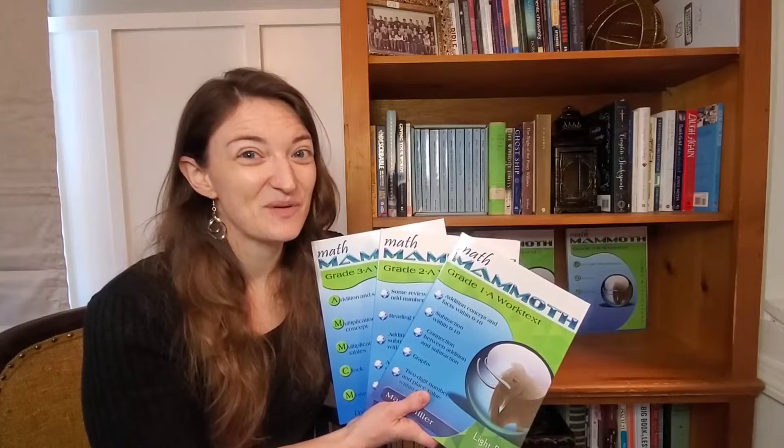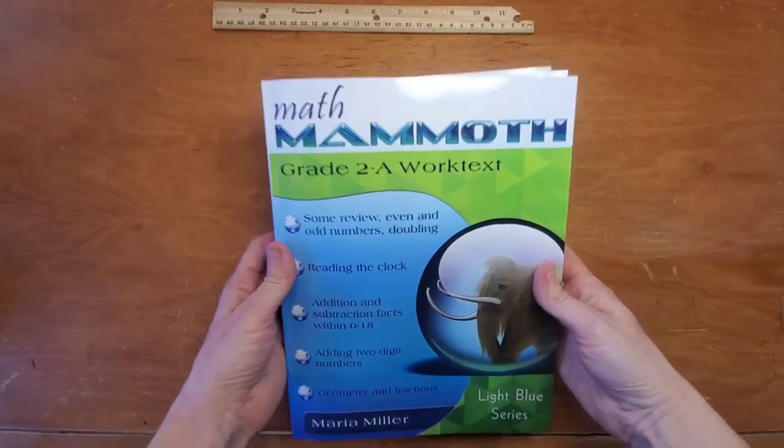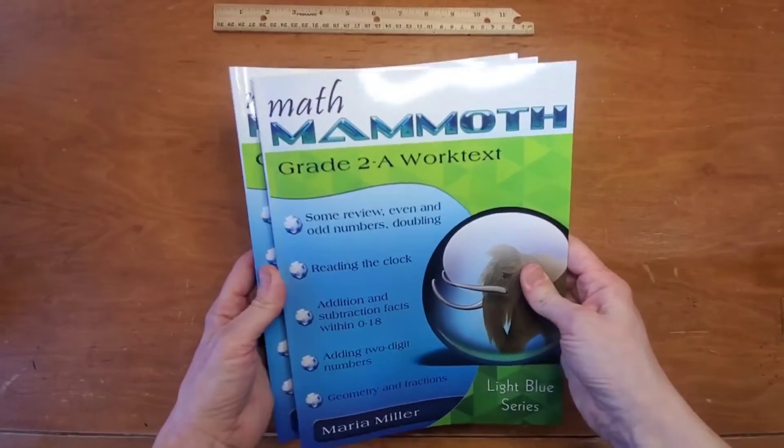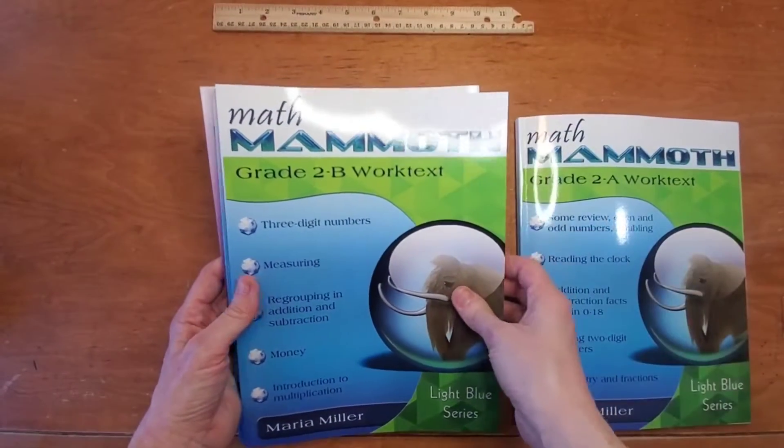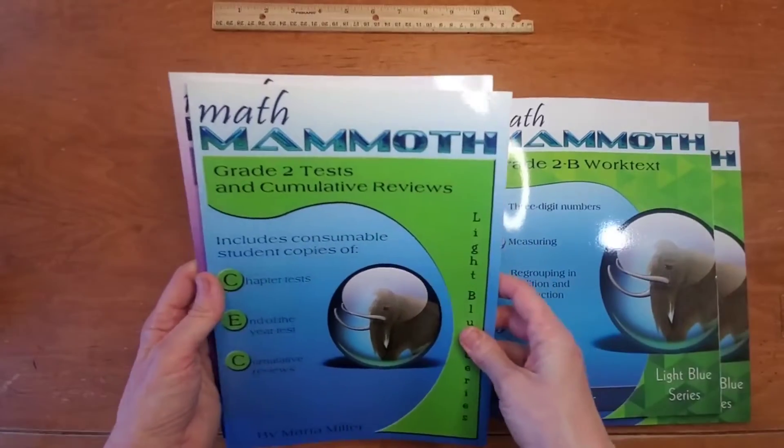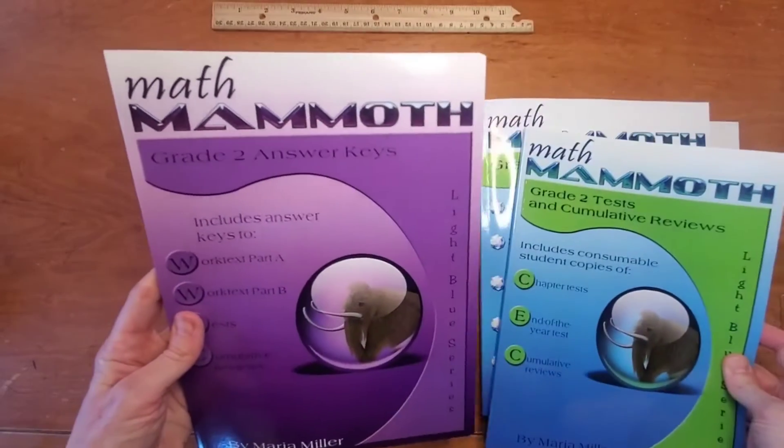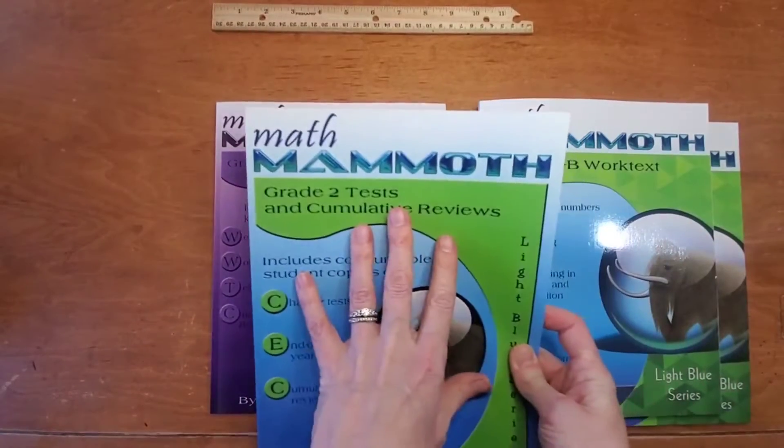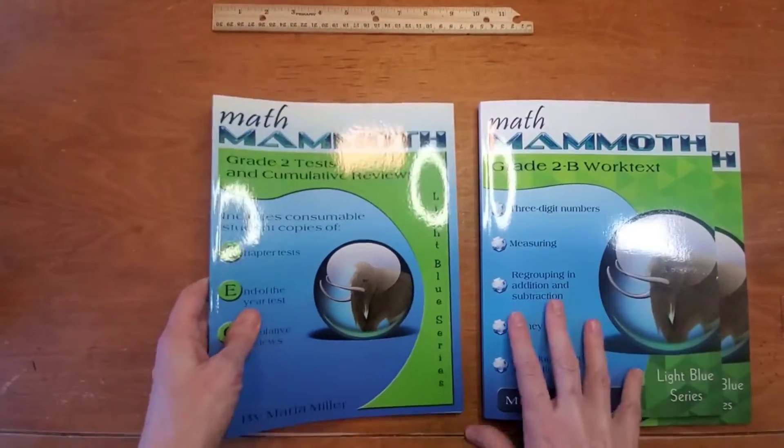All right, let's look inside. Time for a real page-turner. Math Mammoth, grade two. There's the A worktext, B worktext, tests and cumulative reviews, and the answer keys. The answer key has everything for the tests and cumulative reviews as well as what's in the worktext.